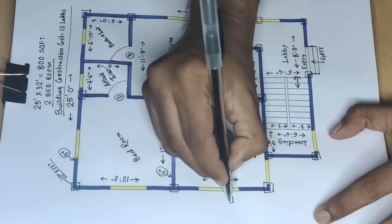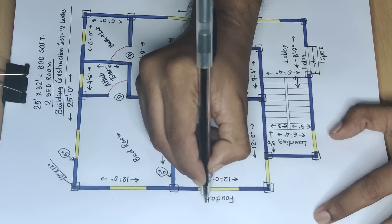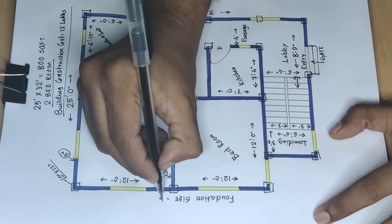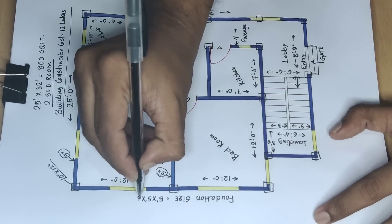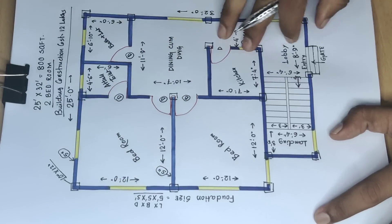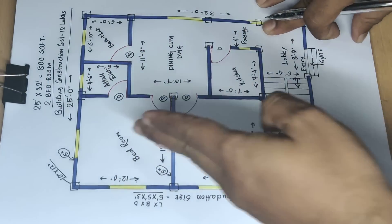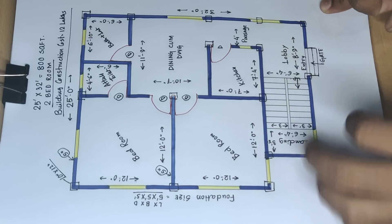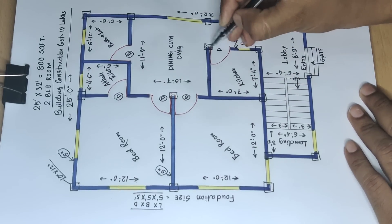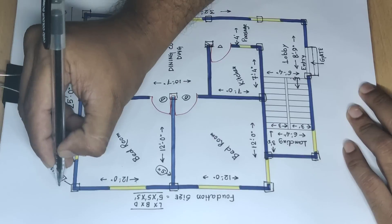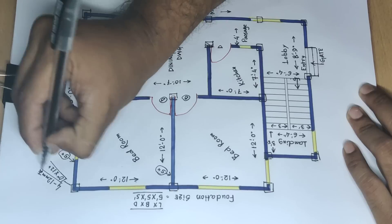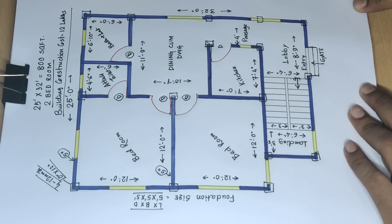Foundation size — footing length and depth. This is the complete house plan. Column reinforcement: four numbers 12mm tor bars used in this column. Thank you for watching this video.